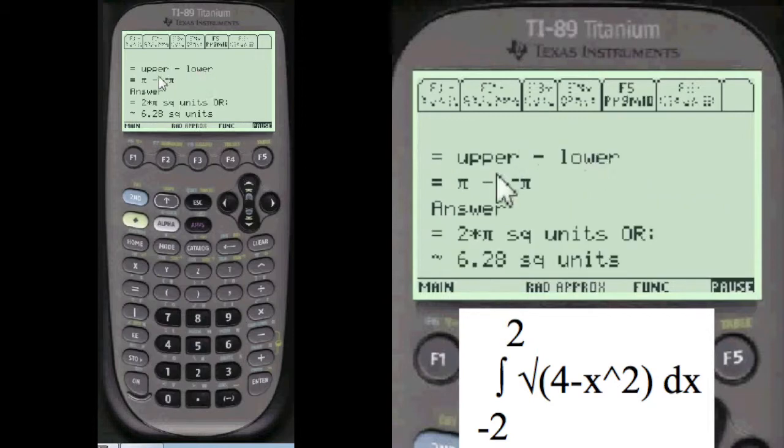It's incorporated into the x values, and the answer is minus pi. Take the upper minus the lower, pi minus a minus pi. You get 2 pi square units, or 6.28 square units.